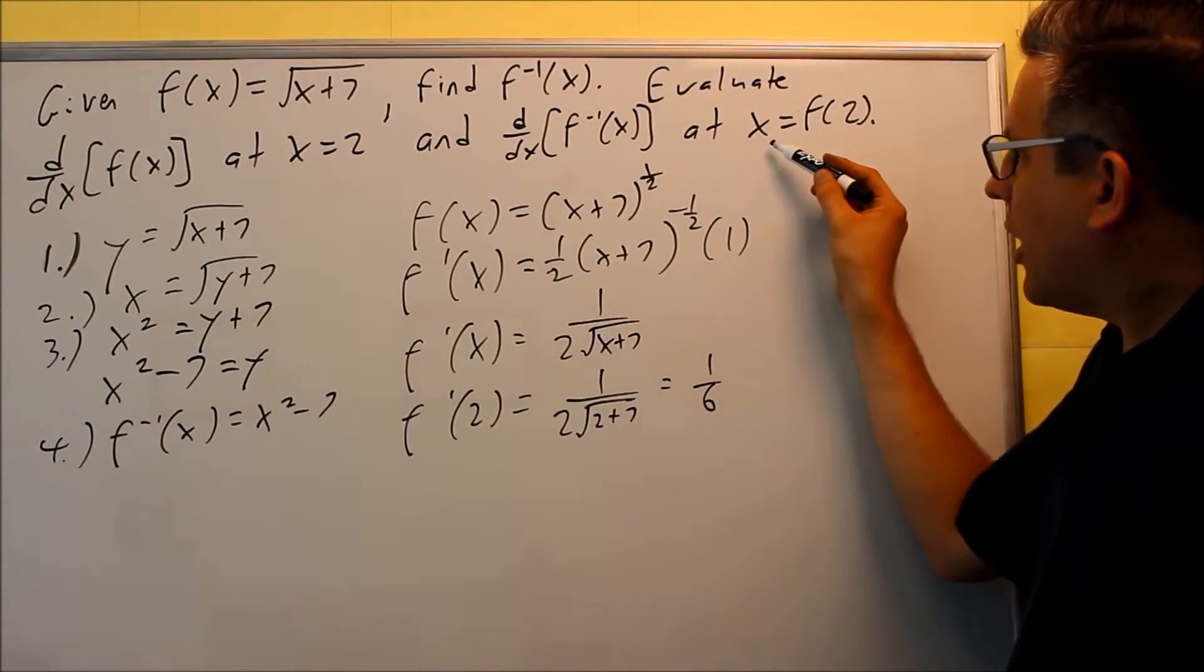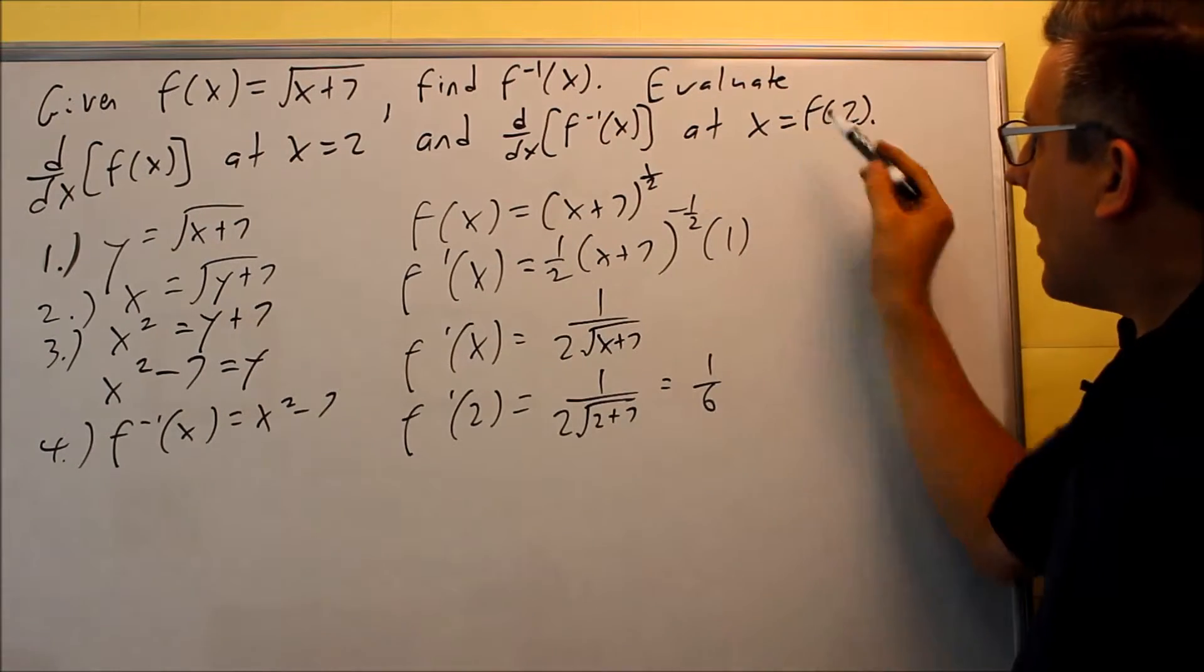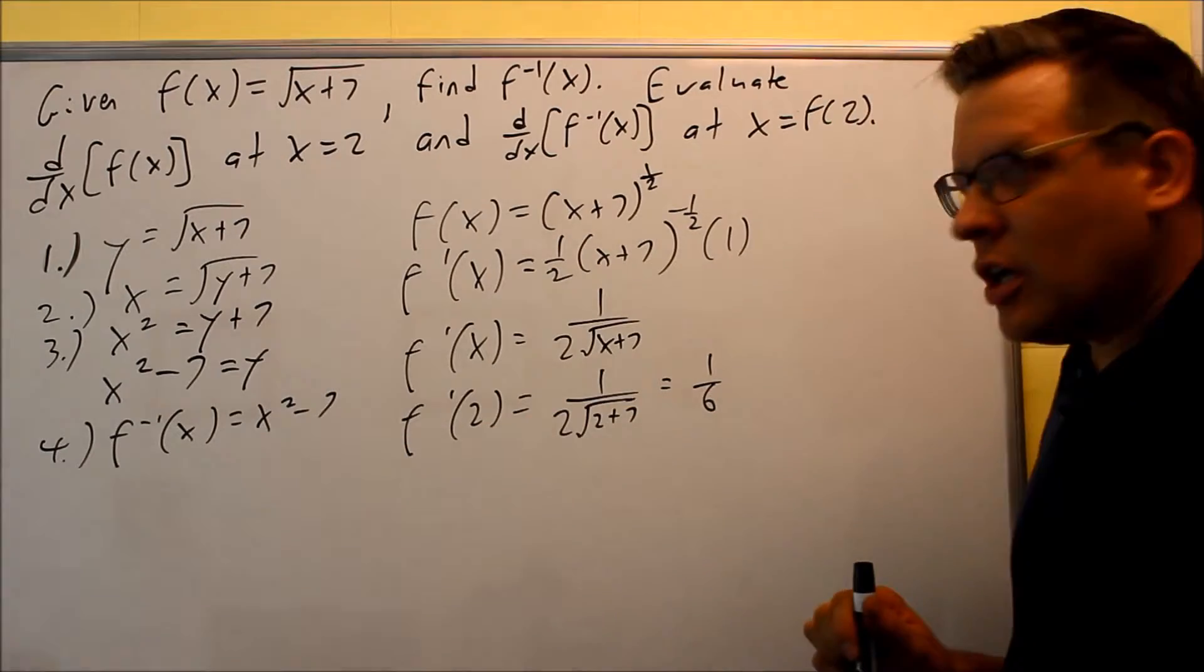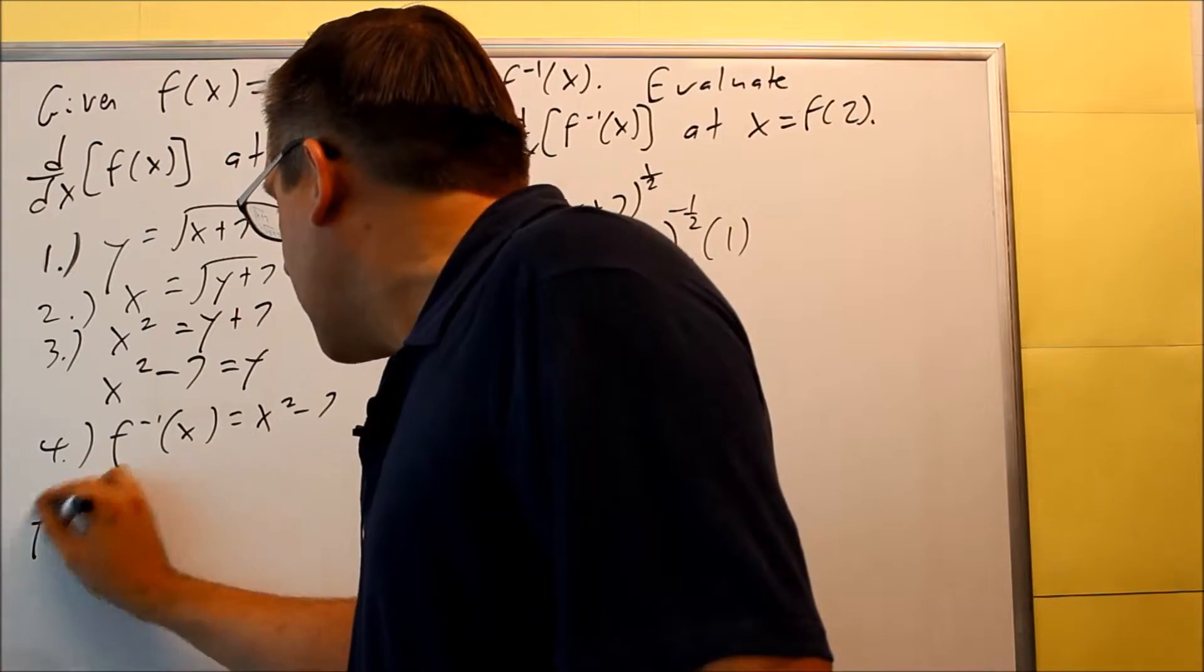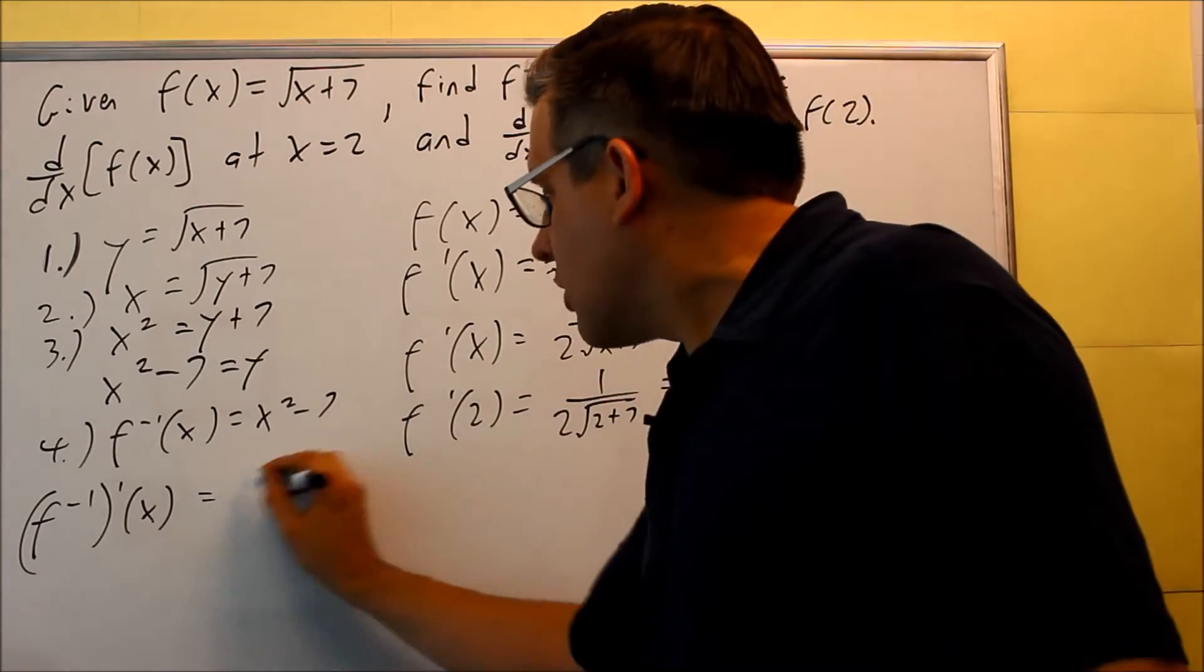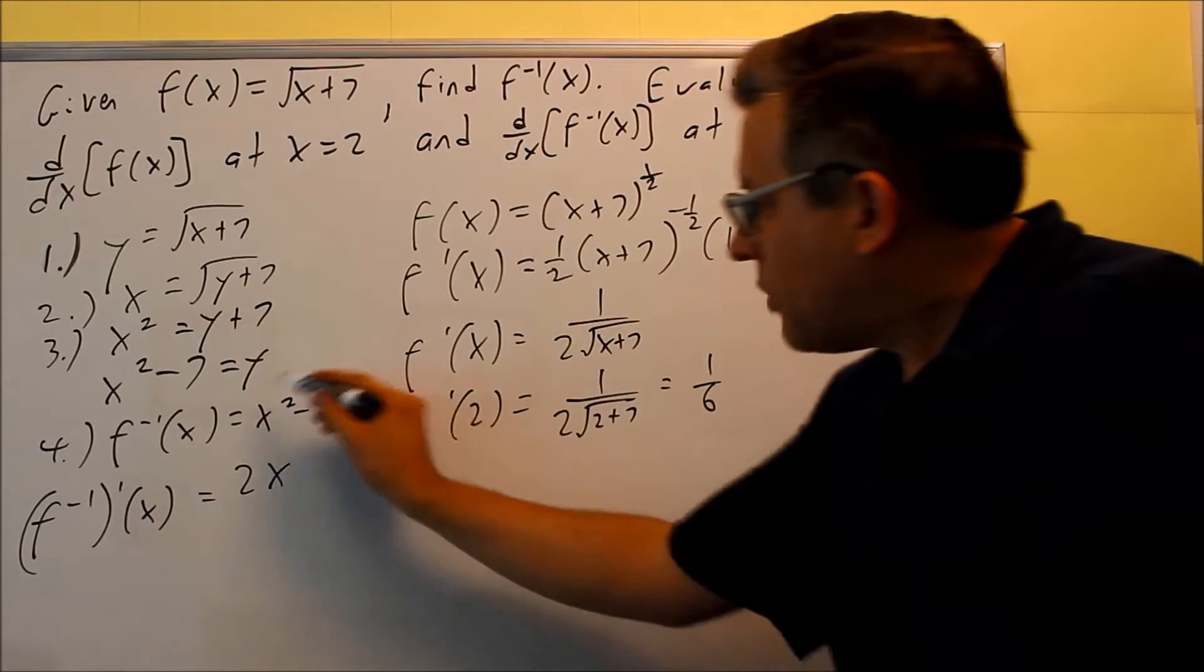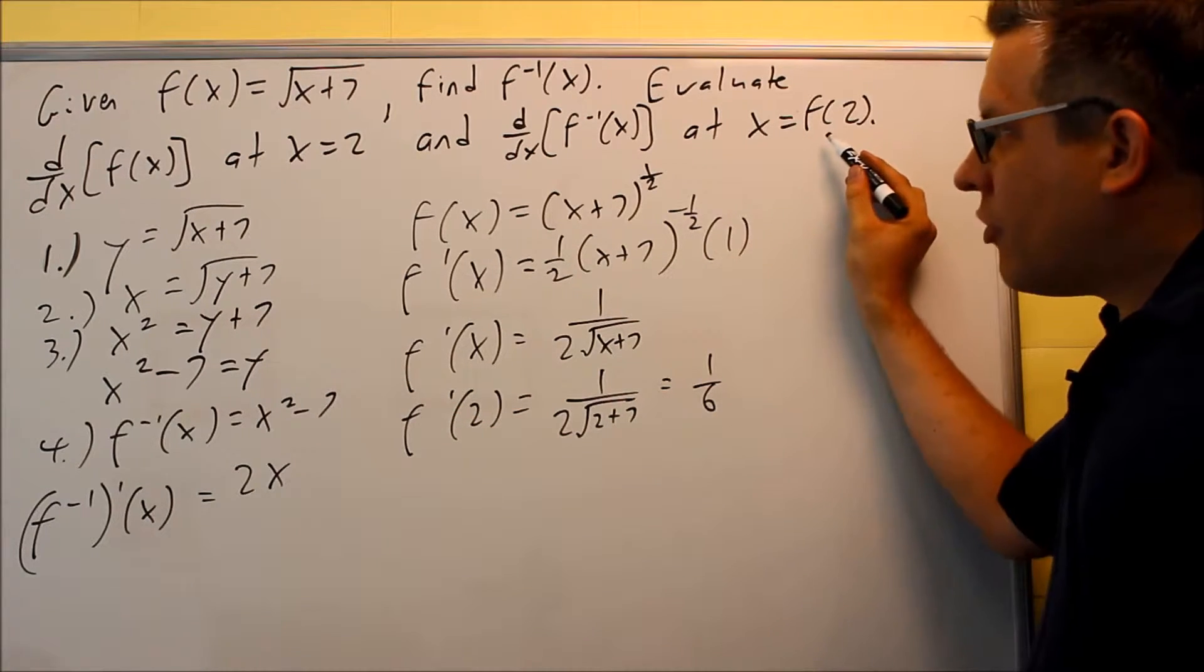Now they ask us to find the derivative of the inverse at x equals f(2). Here's the inverse: x squared minus 7. Let's find the derivative of the inverse. For this, you're going to get 2x by the power rule. They want you to evaluate this at x equals f(2).